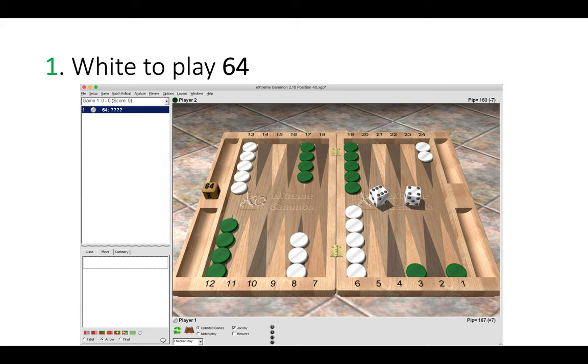In this first position, white has a six-four to play. Green won the opening roll of a two-five, split the back checkers and plays one down to the eight point. These are all taken from money games. So how do you play six-four here as white?